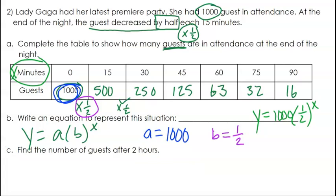Alright. So now let's answer our question c. Find the number of guests after 2 hours. So 2 hours is 120 minutes. So if I look at my table, 90 minutes, 15 more minutes than that would be 105 minutes. And then the next one would be 120 minutes.